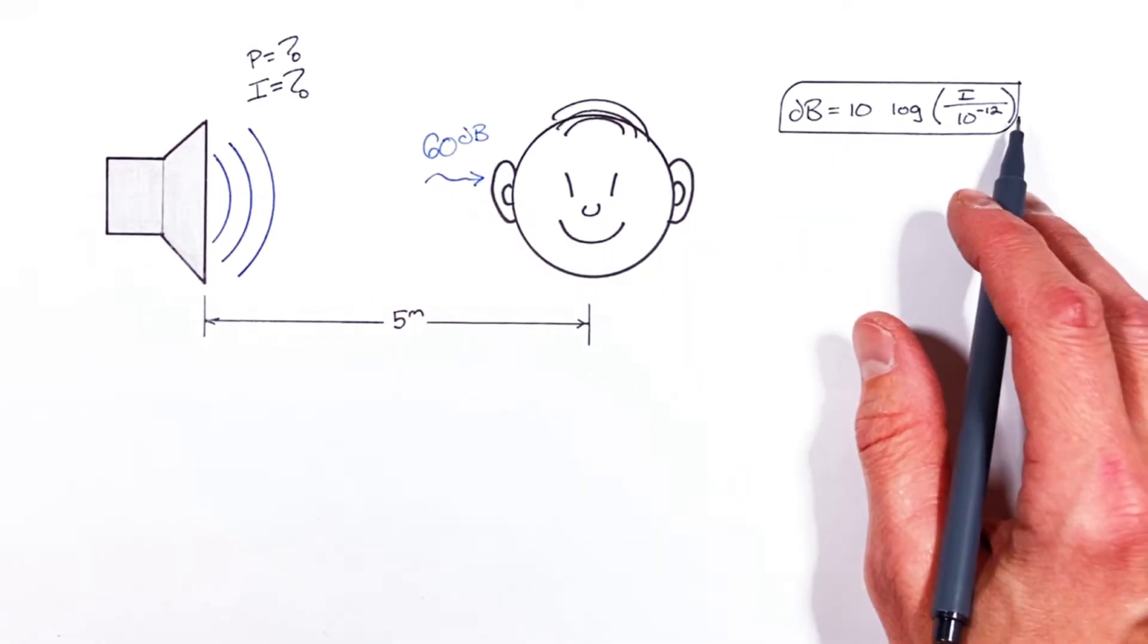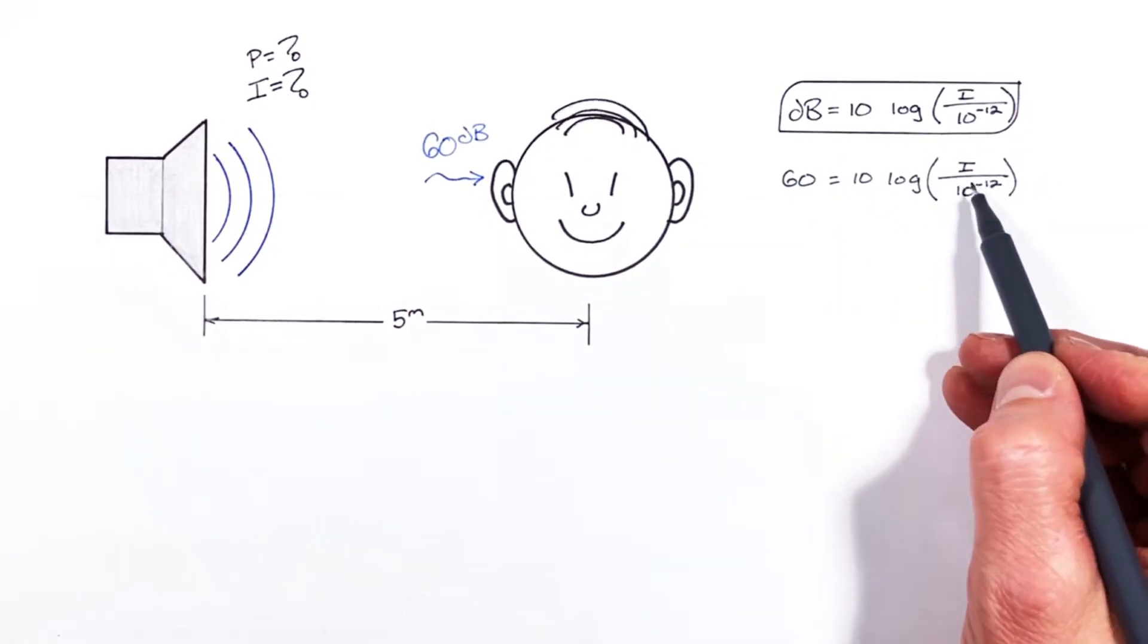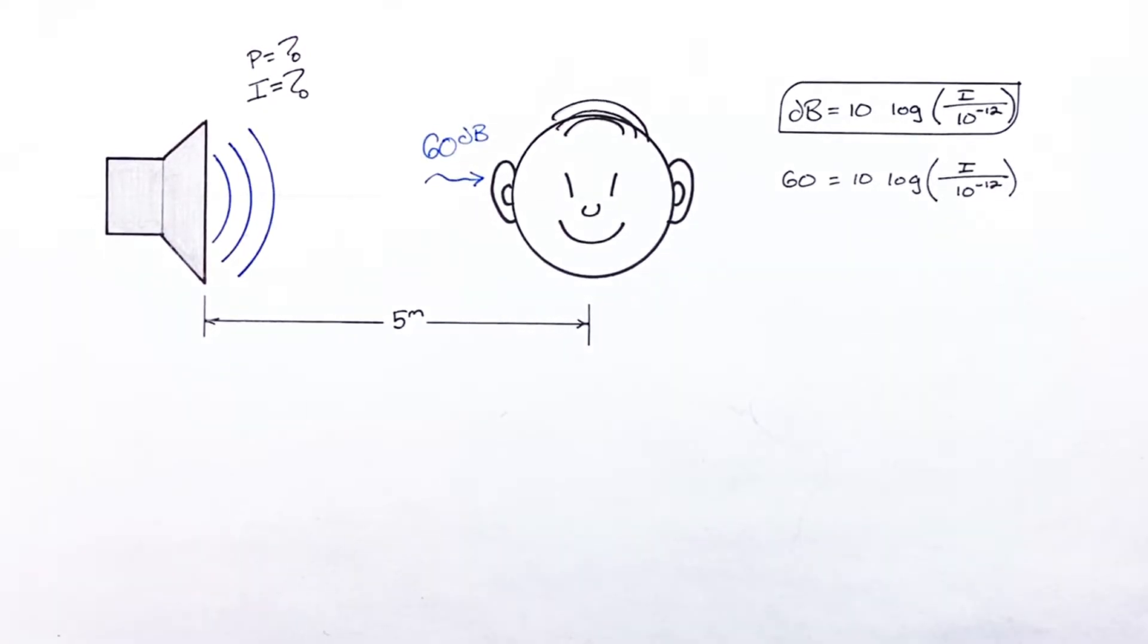First subbing in our 60 decibels into the equation we find we need to solve for the intensity and cleaning up the algebra here.